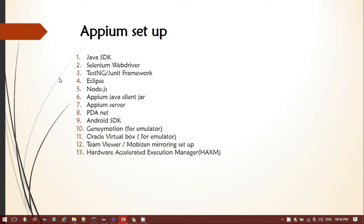Node.js is an open source server framework that allows you to run JavaScript on the server. Apart from that, you will need the Appium Java client JAR file and the Appium server. You will also need PDANet for USB and Bluetooth tethering. When carrying out automation tests, your device needs to be in USB debugging mode, so for tethering we will be using PDANet.